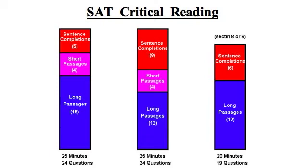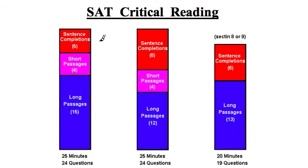But you don't know which of the ten sections is the experimental one, so you should treat all of them as actual. The critical reading consists of 67 questions in three sections, all multiple choice. Sentence completion questions are at the beginning of each critical reading section, and consist of a sentence with one or two blanks where you choose the word or words that best fit. These are heavily dependent on vocabulary.